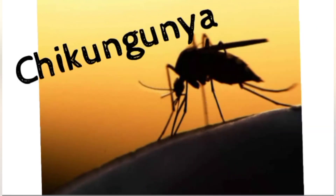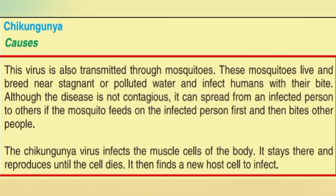Now I'm going to explain the third disease caused by mosquitoes — chikungunya. This virus is also transmitted through mosquitoes. It is caused by the chikungunya virus, which infects the muscle cells of the body. This disease is not a contagious disease — contagious means a disease that spreads from person to person through physical contact. However, it can spread if a mosquito bites an infected person and then bites other people.